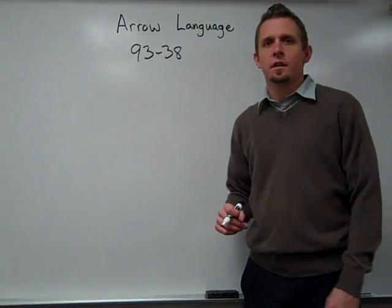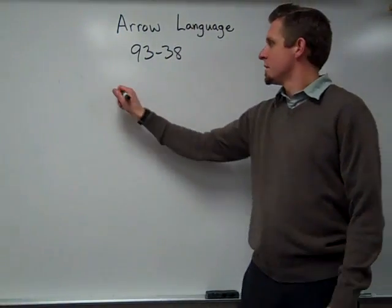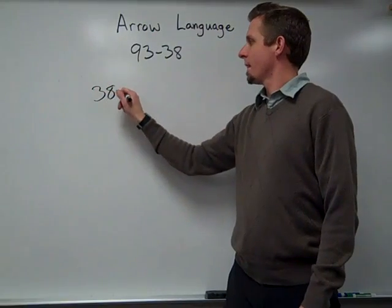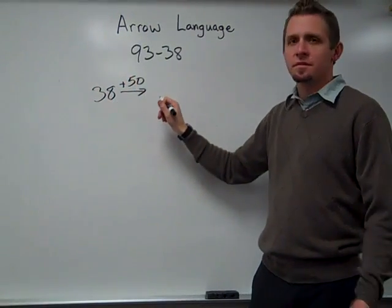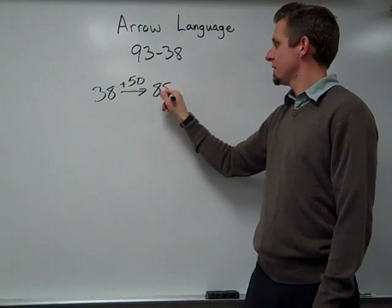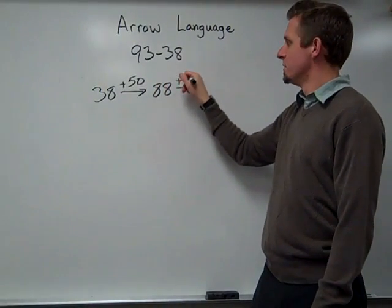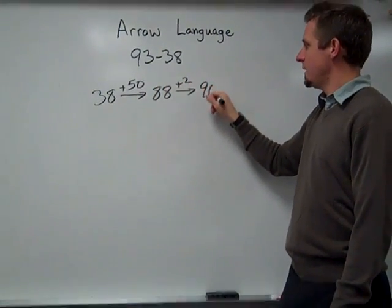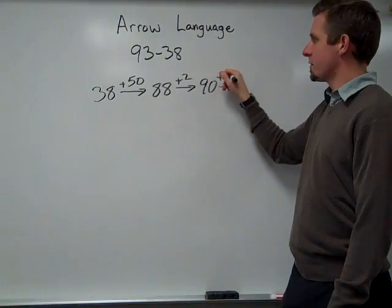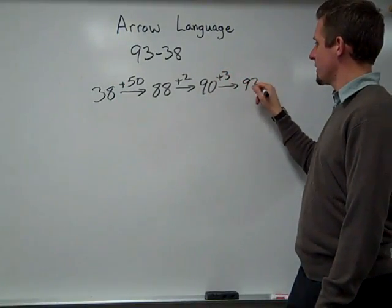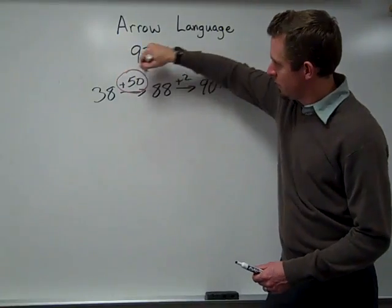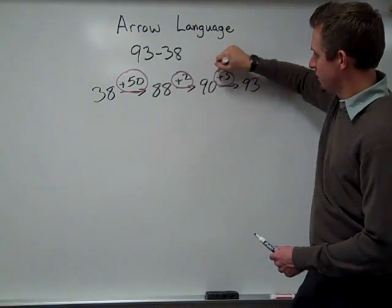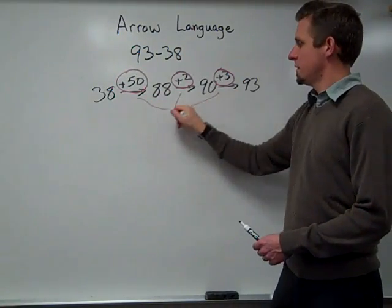So I could also use arrow language building up. So I could start at 38. Maybe I would add 50. 38 plus 50, that's 88. Then I might add 2 to get to 90. Add 3 more to get to 93. So my answer is the 50 plus the 2 plus the 3, which gives me my 55.